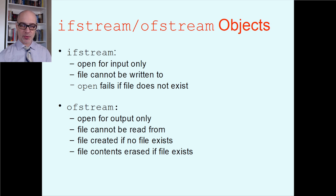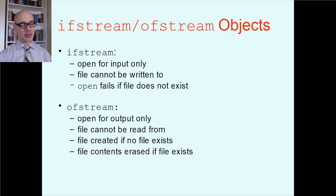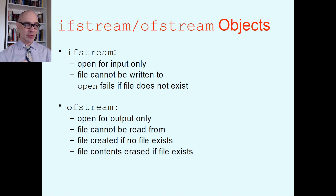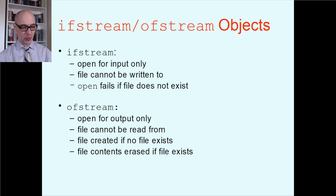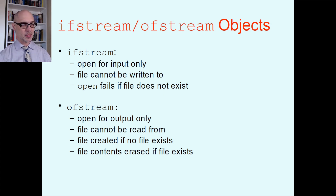The ofstream object — output file stream — is dedicated for output only. When you open that kind of file, you can only write data to it; you cannot read it back. Opening an ofstream actually makes a new file on your drive. If it wasn't there before, it's now created. Be a little careful because if there was already a file of that name, it just got erased — you made a new file and wiped out anything that had that name before. So make sure you actually intend to make a new file with your ofstream open operation.